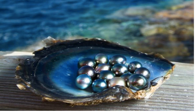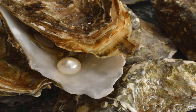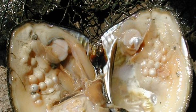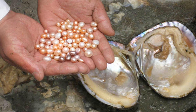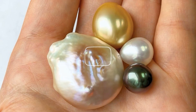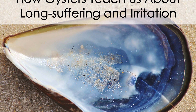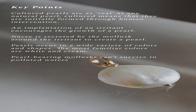In this segment, we will explore the introduction of irritants inside the mollusk's shell and their role in pearl formation. When a grain of sand or a tiny organism finds its way inside the shell, it becomes an uninvited guest to the mollusk. This foreign object starts to irritate the soft tissues of the animal, triggering a remarkable response that eventually leads to the formation of a pearl.